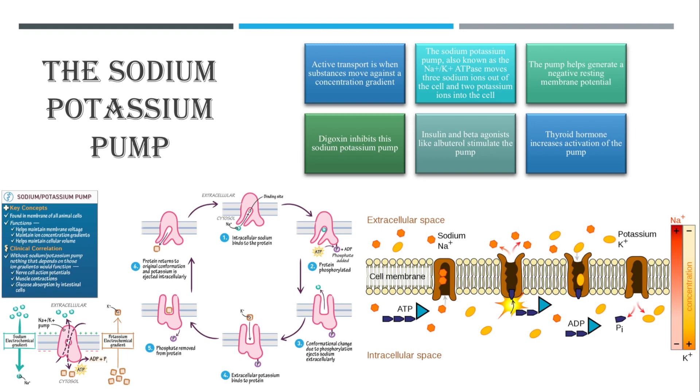Once in the extracellular space as shown here, it will release the sodium molecules. When it's facing the outside, the pump will bind to the potassium ions here shown in yellow, and then this triggers the phosphate group to fall off. When the phosphate group falls off of the pump, it will cause it to revert back to its original shape, which is opening towards the inside of the cell.